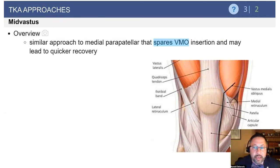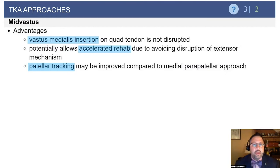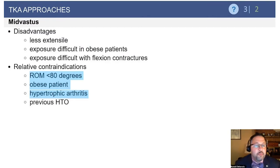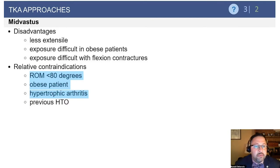The mid-vastus approach is utilized in an attempt to preserve the quadriceps mechanism. It has been shown to have a slightly increased recovery rate of quad function and an improvement in patellar tracking, but in terms of long-term outcomes there seems to be no advantage compared to the medial parapatellar approach. Relative contraindications include a stiff knee with less than 90 degrees of flexion, as this puts tremendous stress across the patellar tendon. The obese patient also presents more difficulty, as adding the mid-vastus can create complications for the patellar tendon.